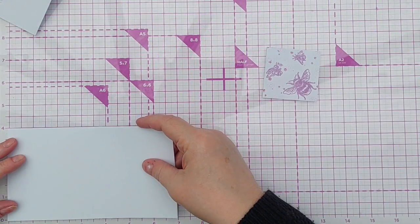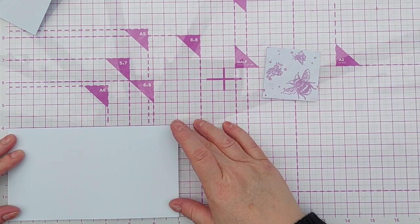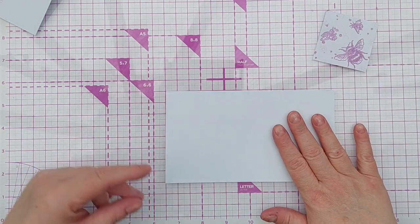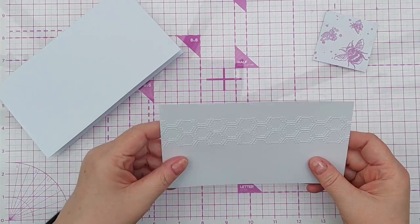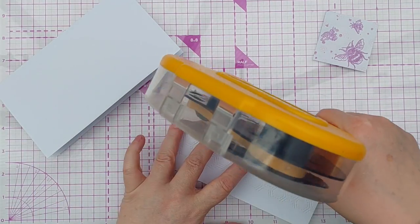My card blank is smooth white cardstock, four by seven inches. My card panel is a little bit smaller. I'm just going to pop some tape on the back.